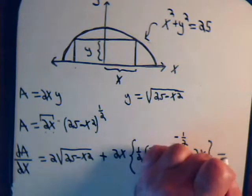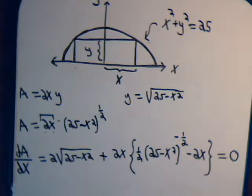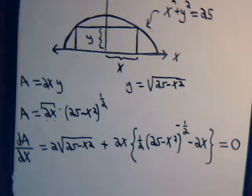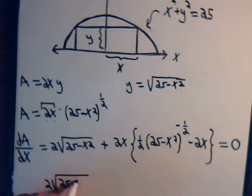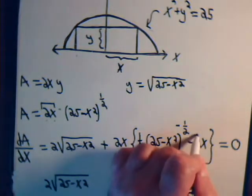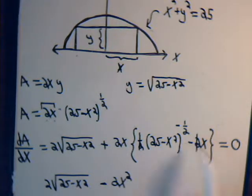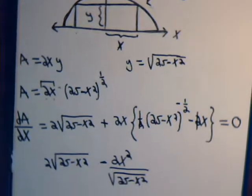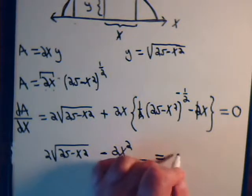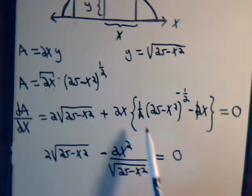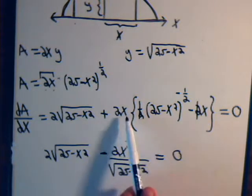We want to set that equal to 0 and solve for x to get our critical points. We have 2 times the square root of 25 minus x squared. The 1/2 and the 2 cancel, so we have minus x times 2x, that's minus 2x squared, with a negative exponent putting this down in the denominator, all equals 0.